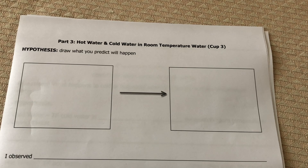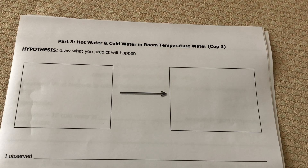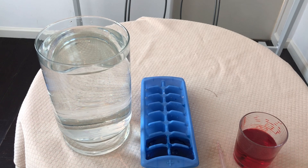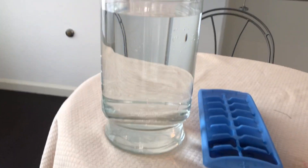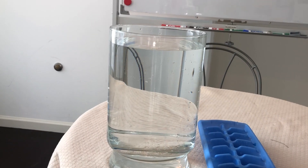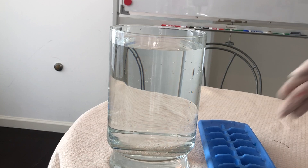Now, before we go to part three, go ahead and make a hypothesis about what you think will happen once we have room temperature water with both hot water and cold water. We're going to use our second blue ice cube, add more hot water, and have a fresh jar of room temperature water. Make a prediction. For this last part, I have a jar with fresh room temperature water, and I'm going to add one blue ice cube that represents my cold water and red hot water all at the same time. Let's start with our blue ice cube.